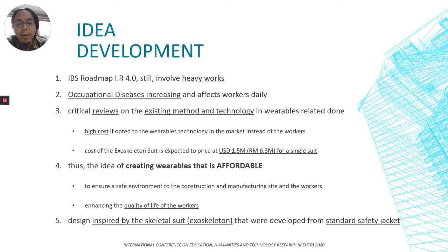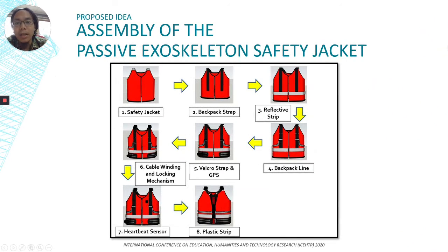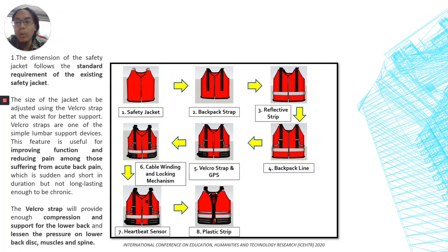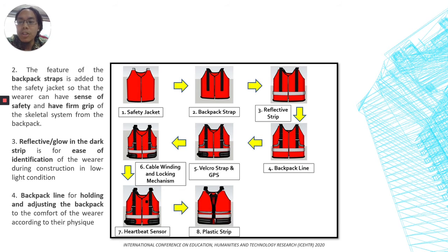The design is inspired by a skeletal suit or exoskeleton developed from a standard safety jacket. The assembly of the passive exoskeleton safety jacket starts with a standard safety jacket following standard requirements. The size of the jacket can be adjusted using a velcro strap at the waist for better support. The velcro straps are a simple lumbar support device useful for improving function and reducing pain among those suffering from acute back pain, providing compression and support to the lower back and lessening pressure on the lower back disc, muscles, and spine. A backpack strap feature is added so that the wearer has a firm grip of the skeletal system.